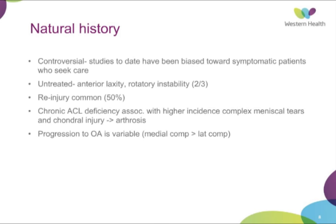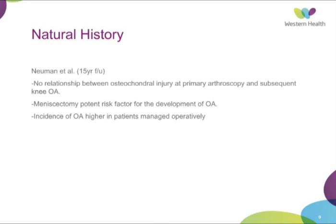The progression to OA is variable and not really well depicted in the literature. We do know that medial compartment OA tends to occur more than lateral compartment as a result of ACL-deficient knees. A study by Newman et al. did a 15-year follow-up looking at progression and natural history of ACL-deficient knees. They noted that osteochondral injury at primary arthroscopy and subsequent OA had no relationship. The most potent risk factor for development of OA is meniscectomy. Interestingly, there's a high incidence of osteoarthritis in patients managed operatively with reconstruction, possibly because they are a younger population who get back to sport at a higher level and have subsequent re-injury.